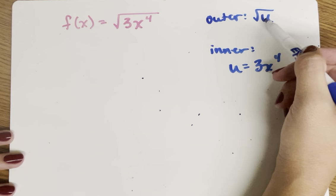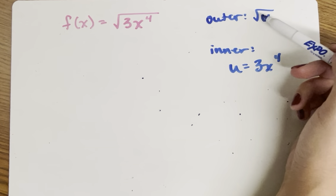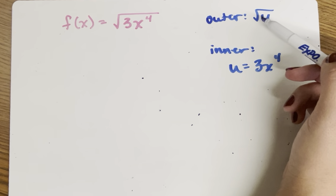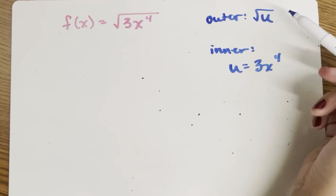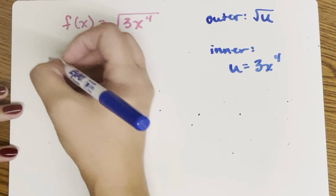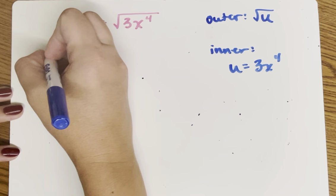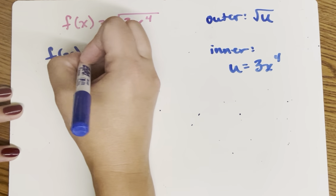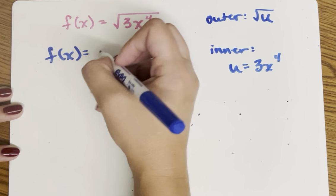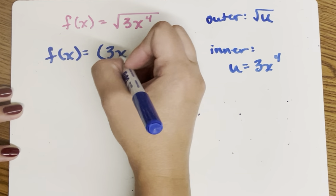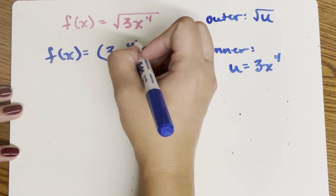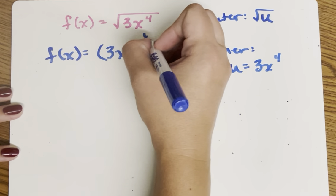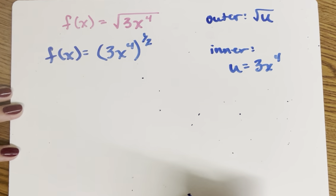I need to apply the power rule here and rethink of this instead of as a radical, rewriting it in exponential form. So I'm going to rewrite this as f of x equals the entire inner function being raised to the one half.